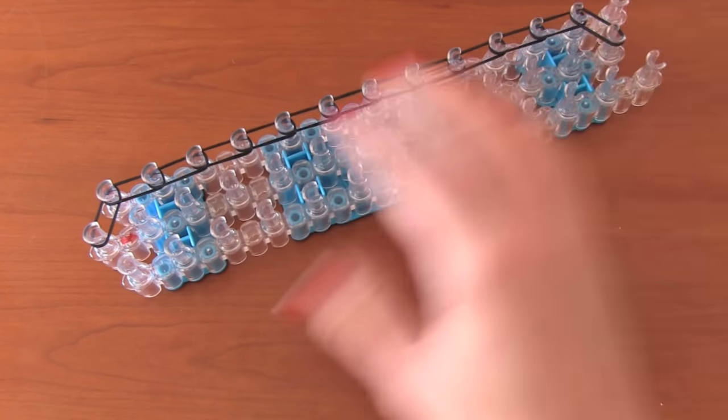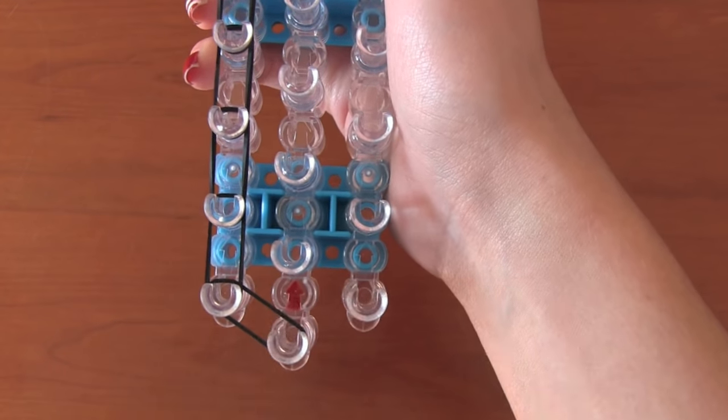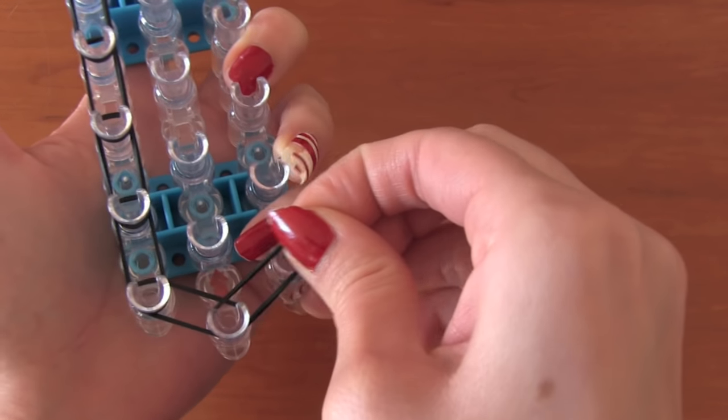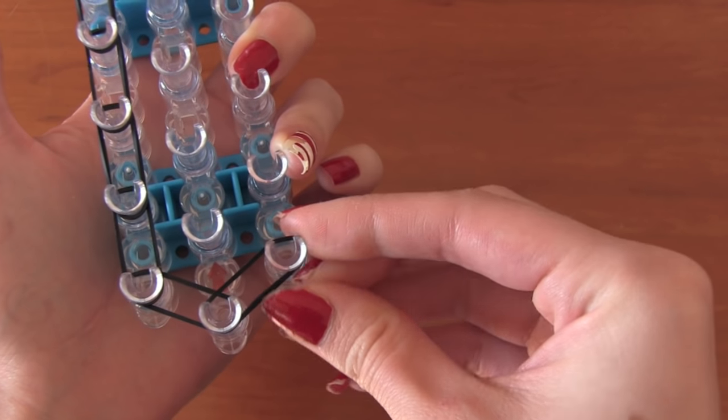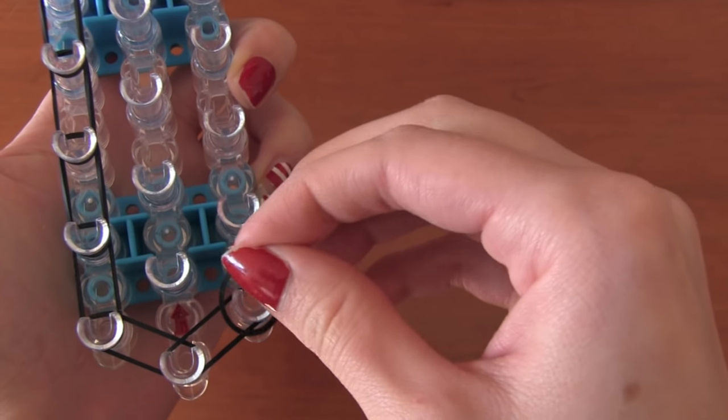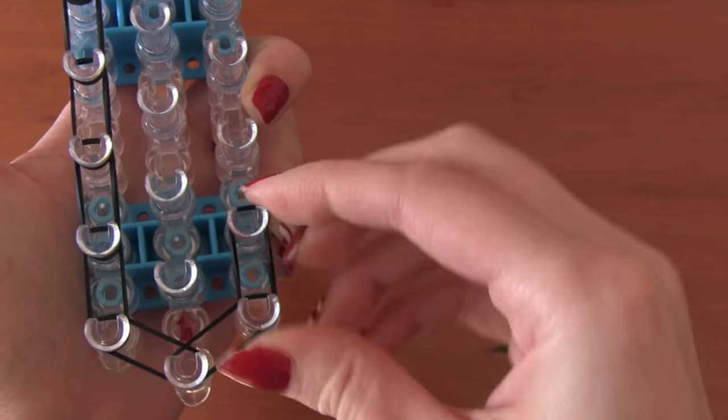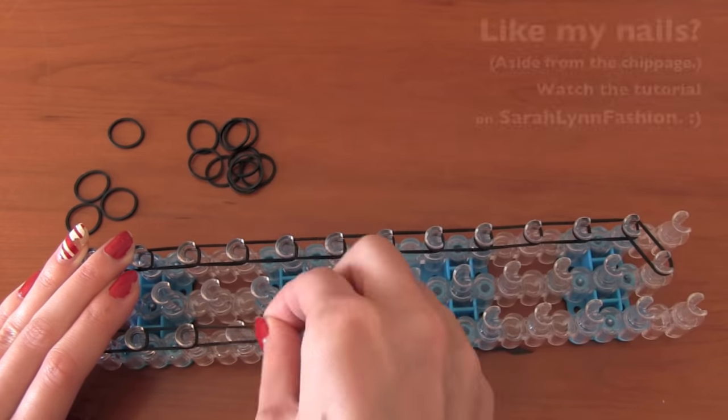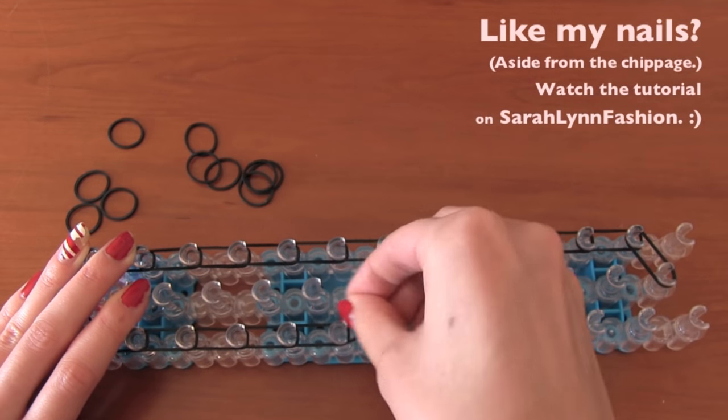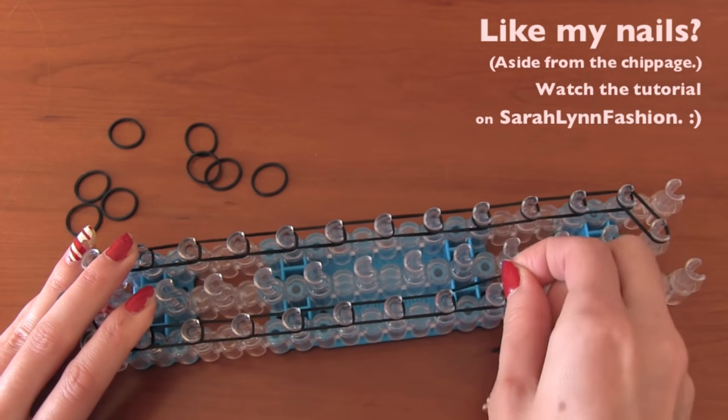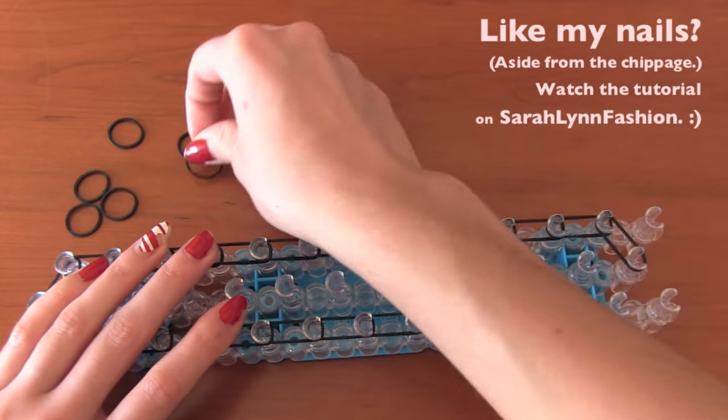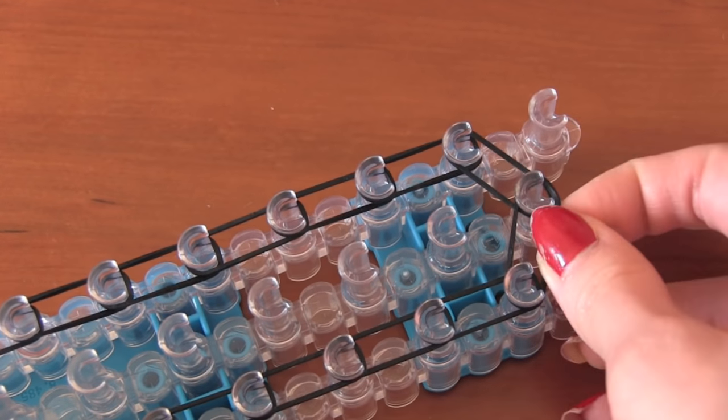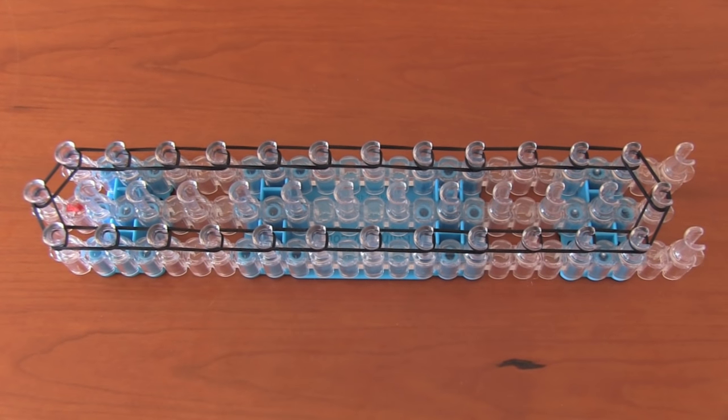Now we're going to repeat the same thing on the entire right side of the loom. So take a band, place it on the middle peg and up to that first right peg. Now from the first right to the second right and just keep going until you get to the second to last right peg. And then put your final band from the second to last right to that last middle one.